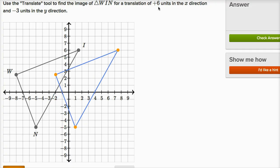So I did that part, I translated positive six units in the x direction, and negative three units in the y direction, so everything needs to go down by three. One, two, three.